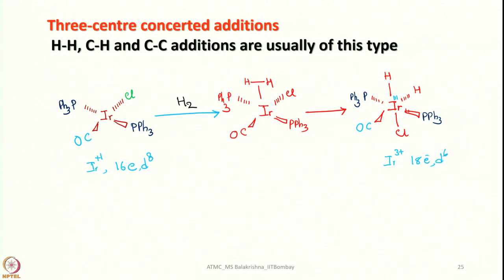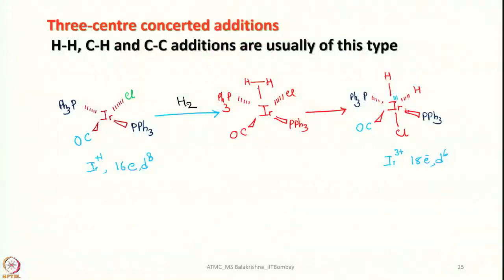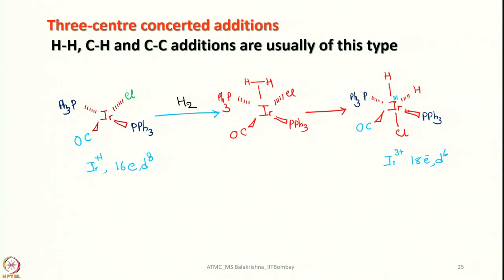Initially, H₂ must be pre-coordinated to the metal centre before oxidative addition. It then abstracts 2 electrons from iridium to generate 2 hydride anions, which are added. Oxidative addition is then complete. In the intermediate, we still have a d⁸ iridium(I) centre, and this intermediate is an 18-electron species.